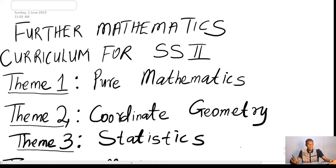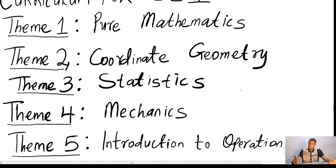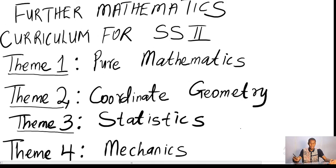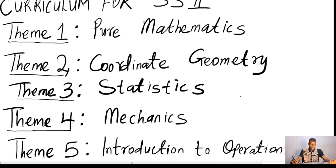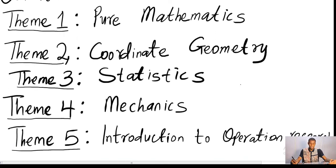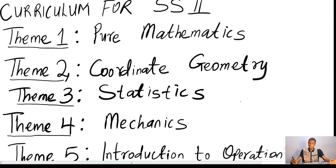We are going to look at the curriculum for Senior Secondary School SS2. It is broken down into five themes as you can see. The first theme is Pure Mathematics. The second one is Coordinate Geometry. The third one is Statistics. The fourth, Mechanics. And the fifth, Introduction to Operation Research.